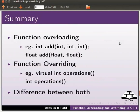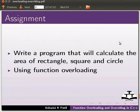Let us summarize. In this tutorial we learnt function overloading — example: int add with three different arguments and float add with two different arguments. Then function overriding — example: virtual int operations and int operations, a function with the same argument and same return type. And the difference between both. As an assignment, write a program that will calculate the area of rectangle, square, and circle using function overloading.